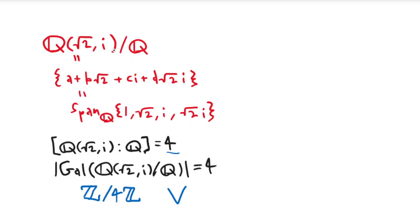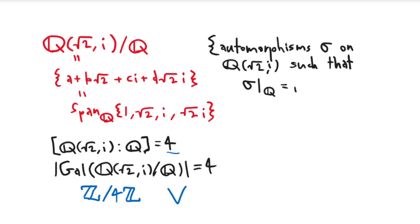And what is it? Well, it's all of the automorphisms. So in this case, it would be all of the automorphisms σ on the field Q adjoin √2, i, such that if you restrict σ to just Q, so Q is kind of like your base field, it just acts like the identity. Okay, so that was our definition.